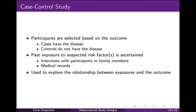A case control study is an observational study in which participants are selected based on their disease status. Cases are people who already have the disease or condition of interest. Controls are individuals from a similar population who do not have the disease or condition. The cases and controls may or may not be randomly selected. Researchers then look backward in time for past exposures to suspected risk factors that might have resulted in the condition. Past exposures may be ascertained from interviews with participants, family members, or from medical records. Case control studies are often called retrospective studies because the outcome already occurred before the participant was included. They are especially useful for exploring the relationship between a disease and possible risk factors when the disease is rare.